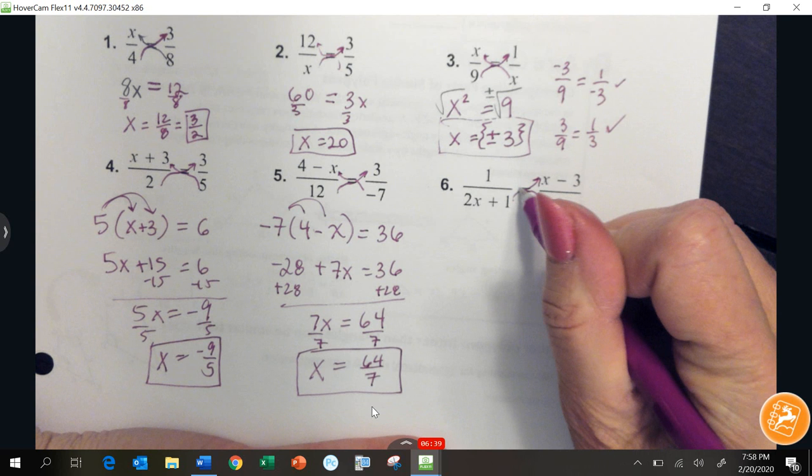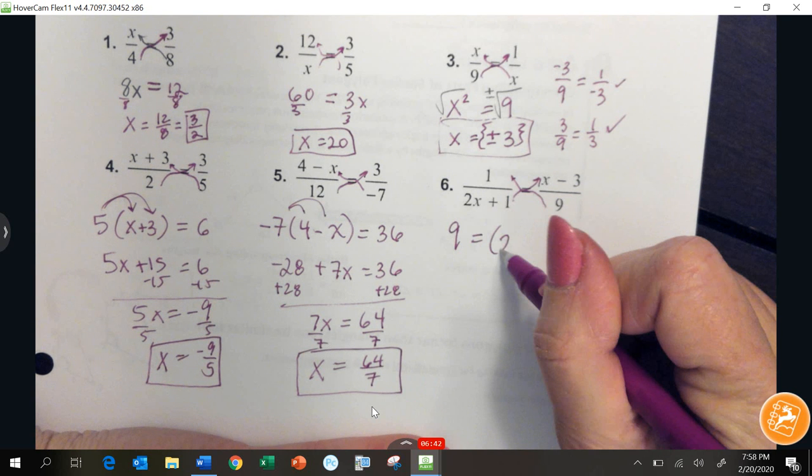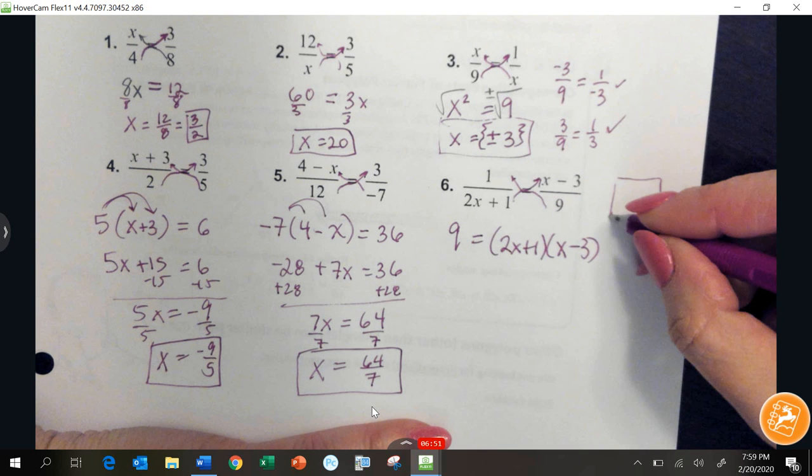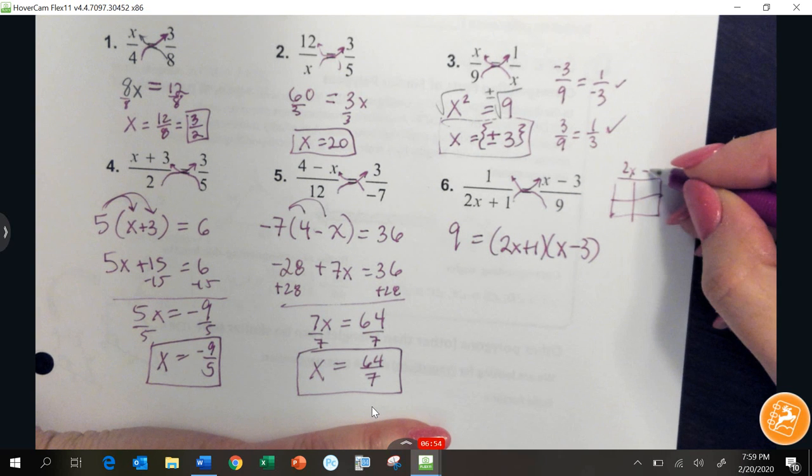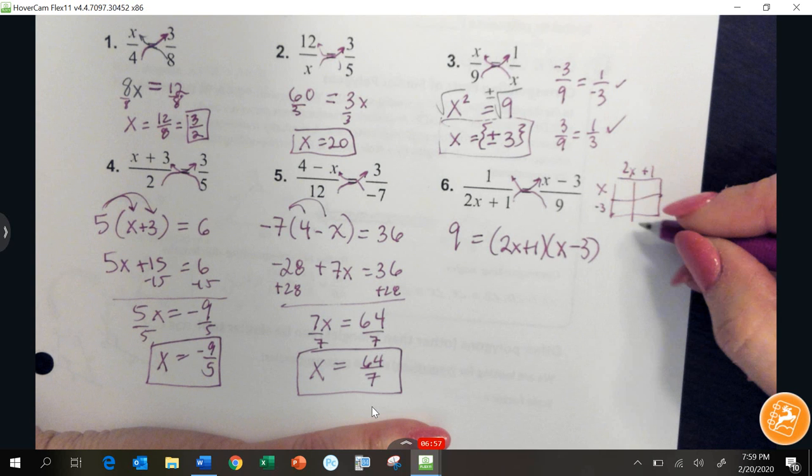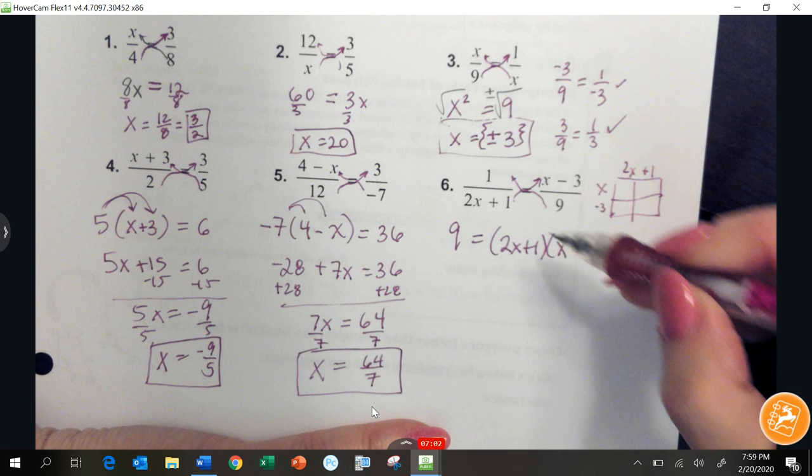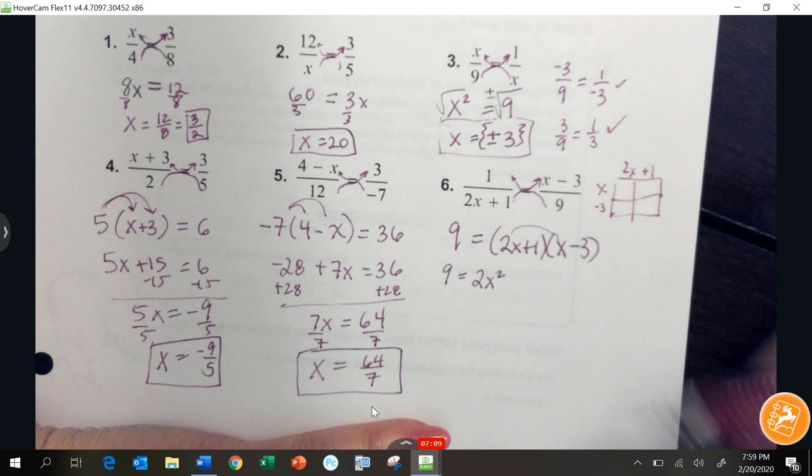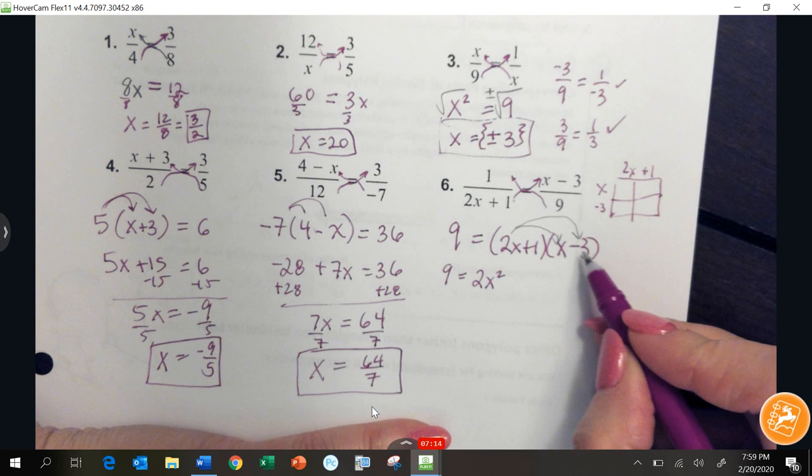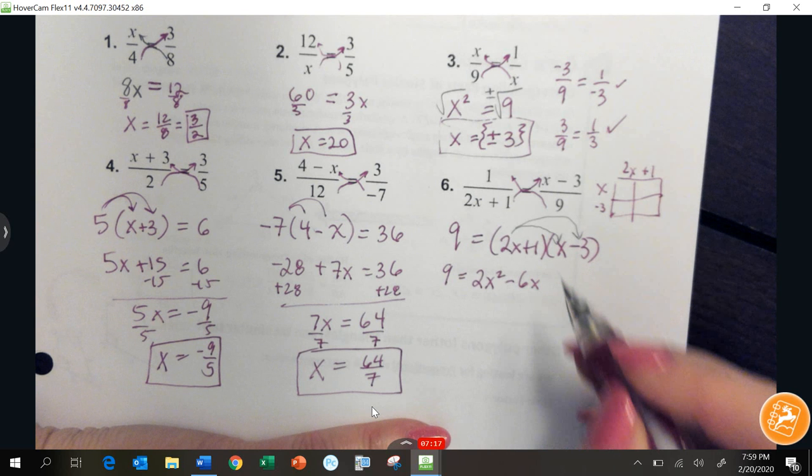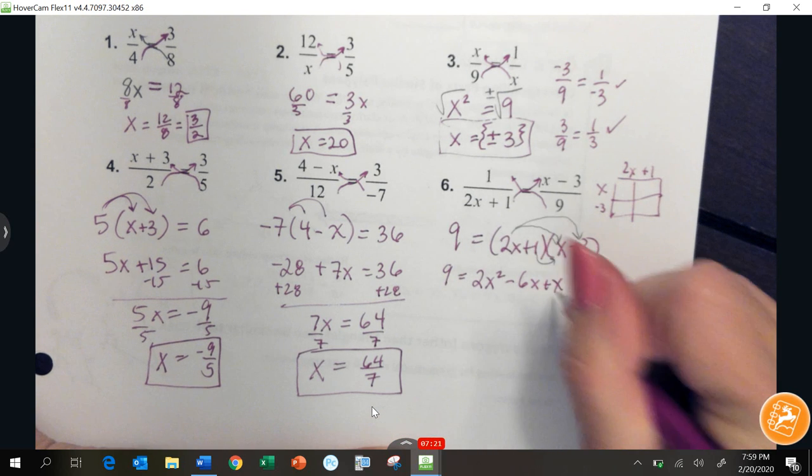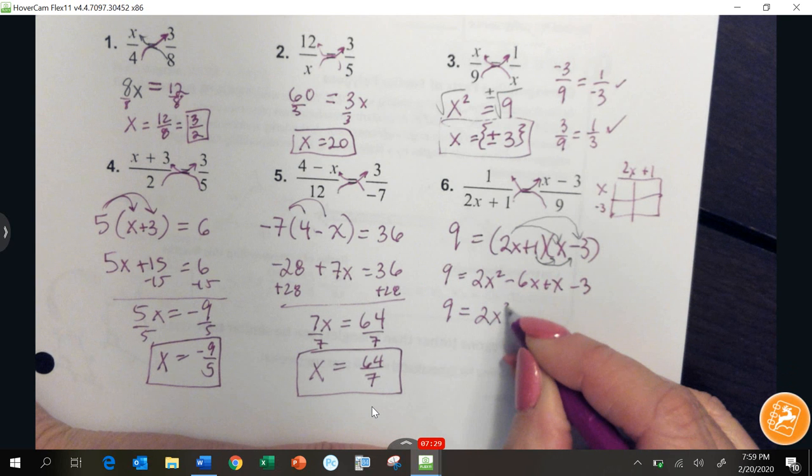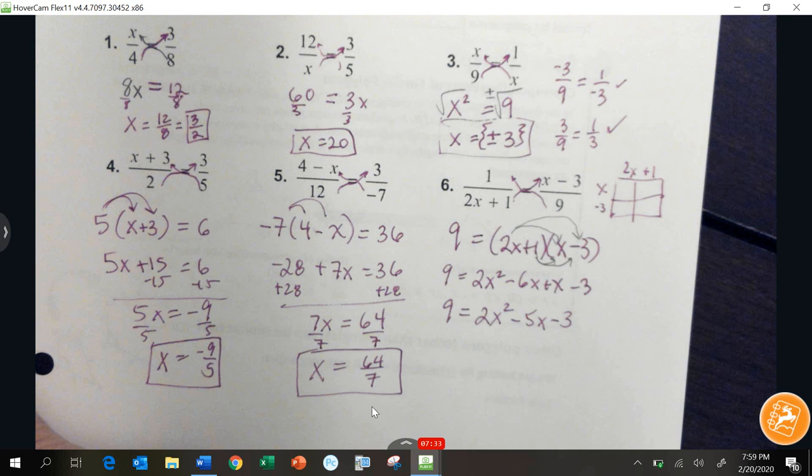Number 6. We can cross multiply up. I'm going to get 9 on the other side. On this side, I'm going to multiply 2x plus 1 times x minus 3. Some of you may have used the box method. Some of you may do the FOIL method, which we're going to do 2x times x. I'm just distributing that 2x to both terms. And then I get 9 equals 2x squared minus 5x minus 3.